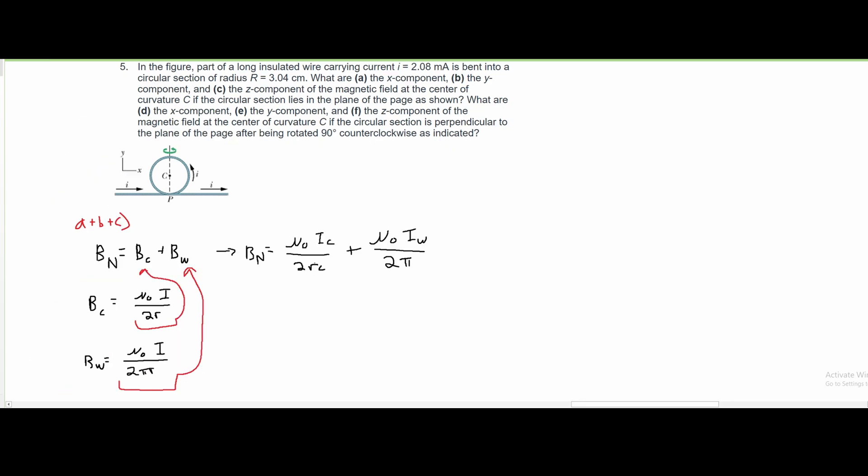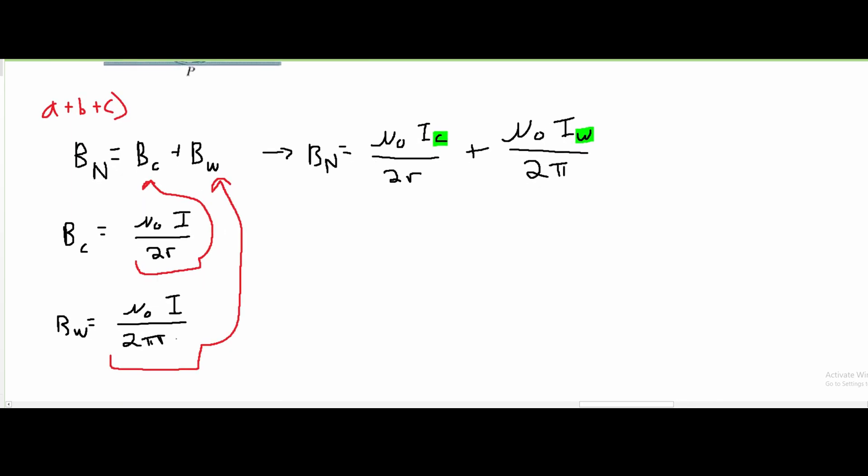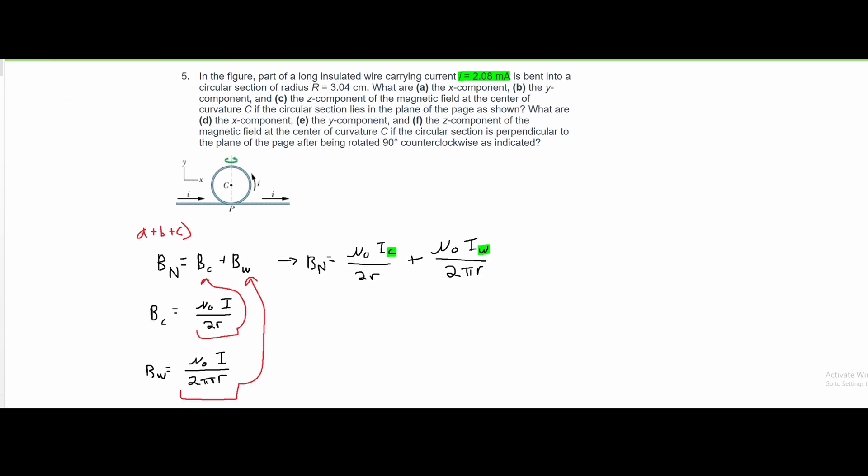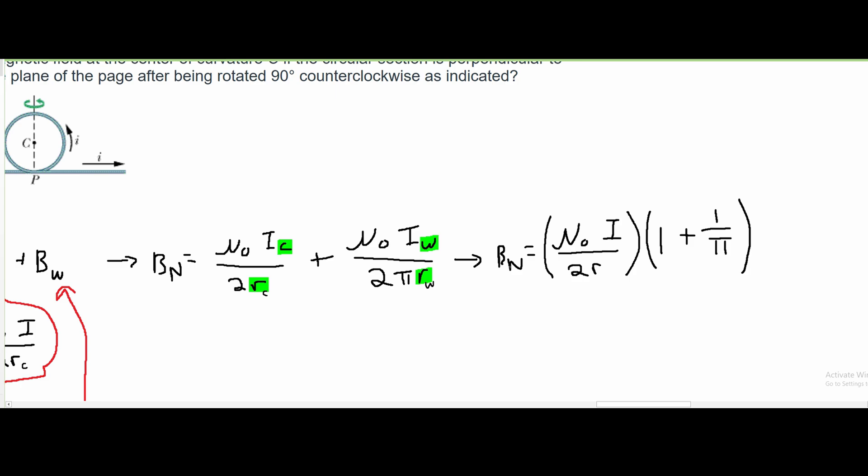After we do this, we can see our constants and what's the same. We're given one i, so that is the same. Both our i_c and i_w are equal. So we can factor that out along with our μ₀ and 2. This should have a 2πr, not just 2π. And since we are also given only one r, we can say that these are the same. After we rewrite this, we're going to have B net equals μ₀ times the current divided by 2r, multiplied by 1 plus 1 over π.